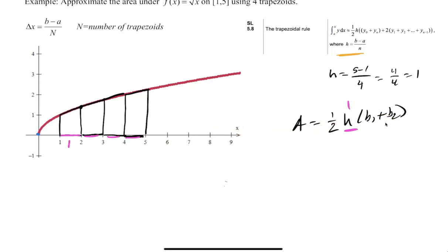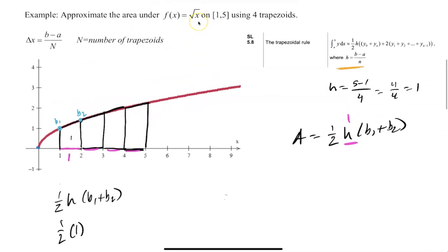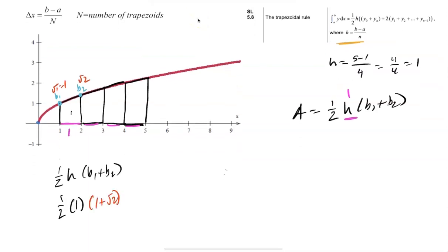For trapezoid 1, area = (1/2)(1)(base 1 + base 2). The bases are the heights of the curve at the endpoints. Base 1: plug x = 1 into √x → √1 = 1. Base 2: plug in x = 2 → √2. So trapezoid 1 area = (1/2)(1)(1 + √2).